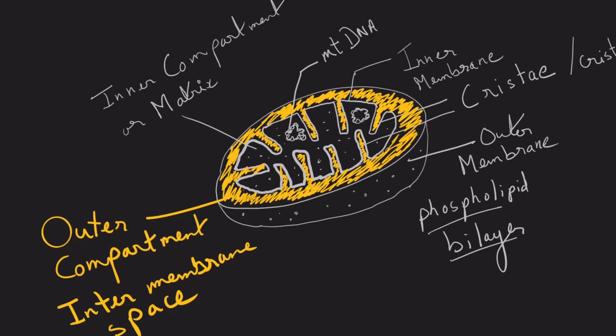So the inner membrane will contain the fluid filled matrix that will contain certain enzymes that are involved in cellular respiration as well as ATP production, and also will have its own mitochondrial DNA. And what's special about this particular DNA is that the mitochondrial DNA will only be inherited from the mother.